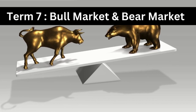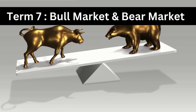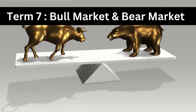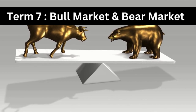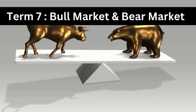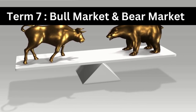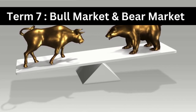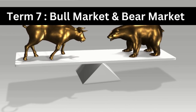Term seven: Bull Market and Bear Market. A bull market refers to a period when stock prices are rising, while a bear market is when stock prices are falling. These terms reflect the overall market sentiment.